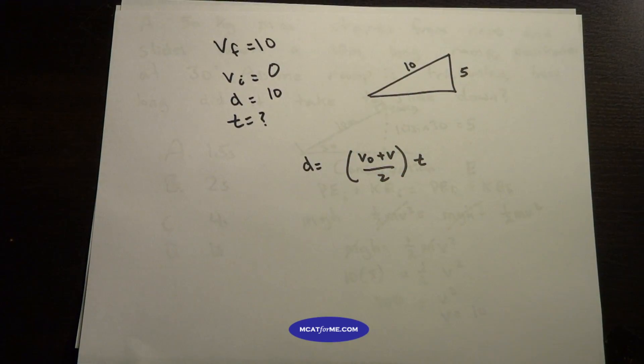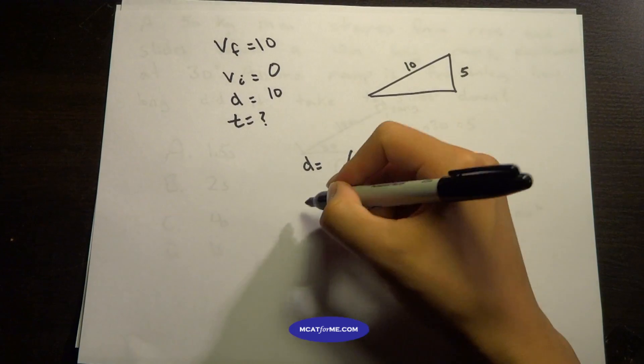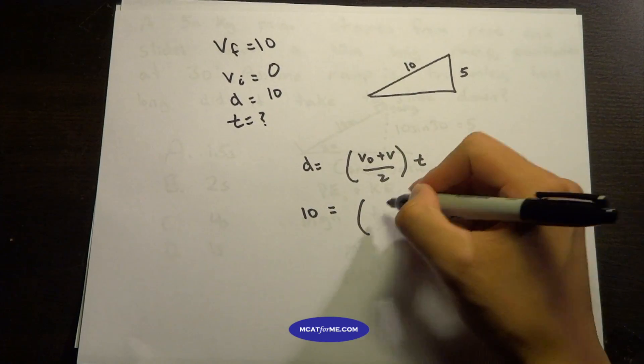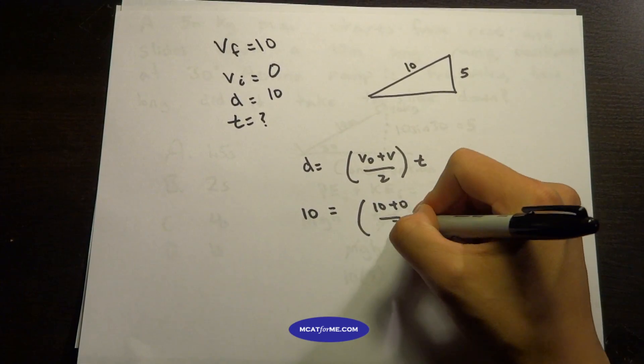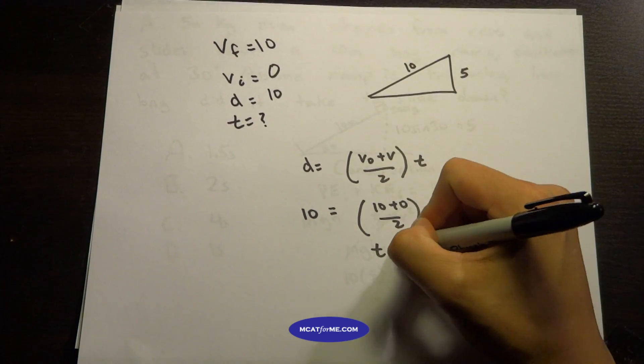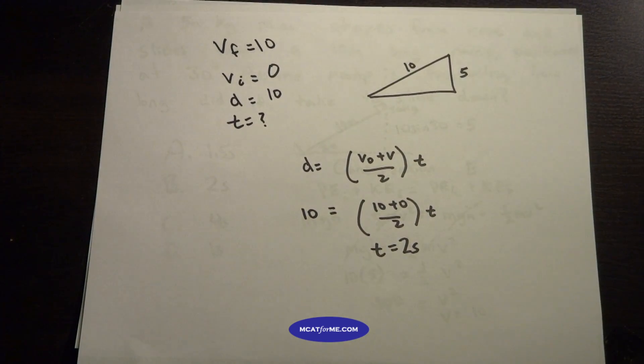We remember from one of those equations from uniform acceleration motion: we have d equals v not plus v over 2 times t. We see that d is 10, v not plus v is 10 plus 0 over 2, and we find that t equals 2 seconds. So that would be our answer.